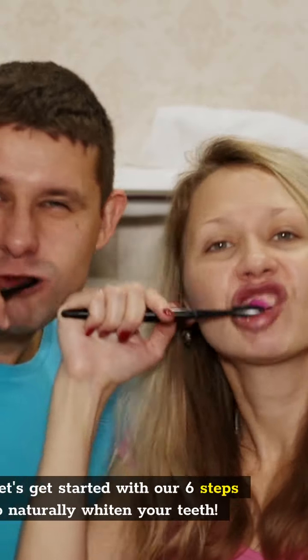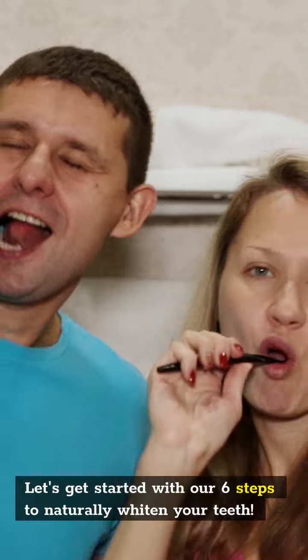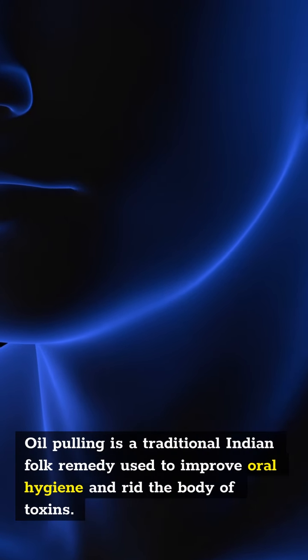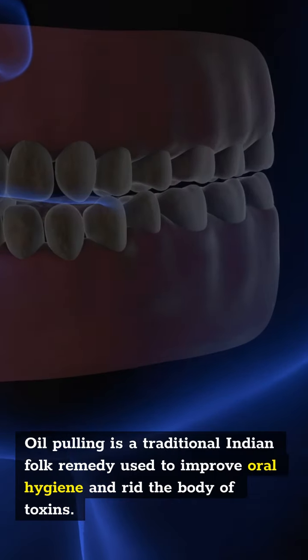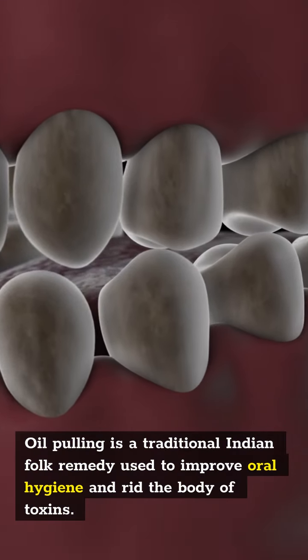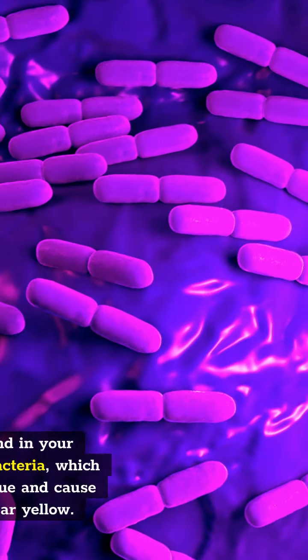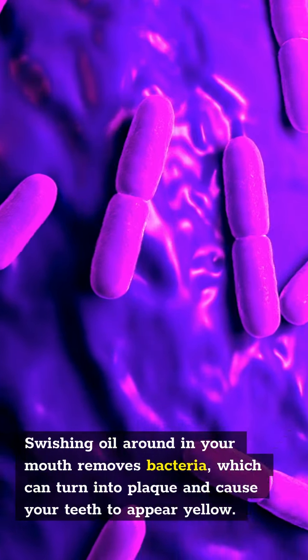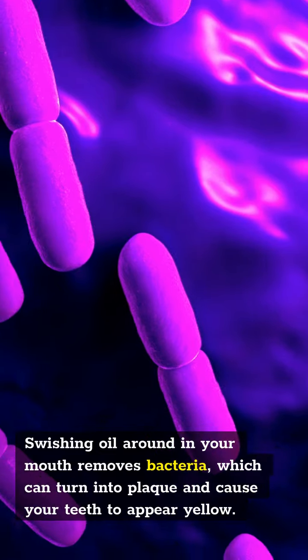Let's get started with our six steps to naturally whiten your teeth. Number one is oil pulling. Oil pulling is a traditional Indian folk remedy used to improve oral hygiene and rid the body of toxins.